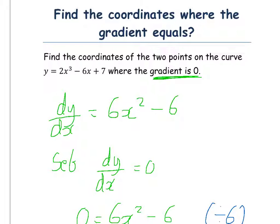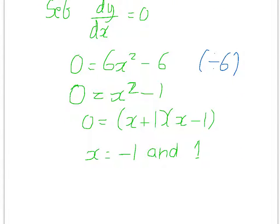So to find the y component of the x values we've just found, we're going to substitute them into our original equation. So our original equation is y equals 2x cubed minus 6x plus 7.